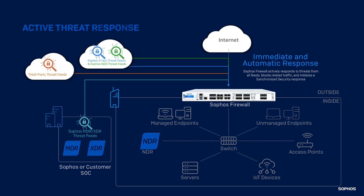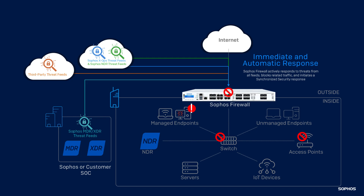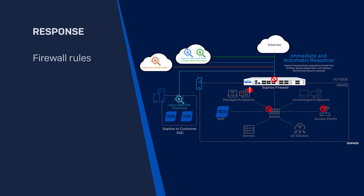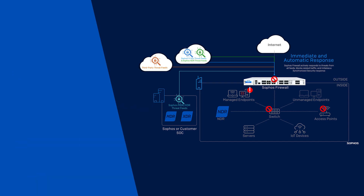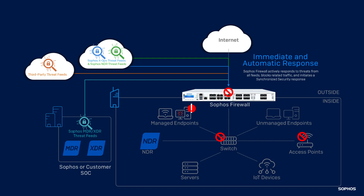For example, if an MDR or XDR threat hunting analyst discovers a potential threat, they confirm it and can immediately take action, pushing real-time intelligence directly to your firewall. Your firewall immediately blocks the threat within all relevant subsystems, including firewall rules, DNS block lists, IPS, web filtering, and deep packet inspection. No manual configuration is required and there's no need to create objects for IOCs, firewall rules, or blocking policies.